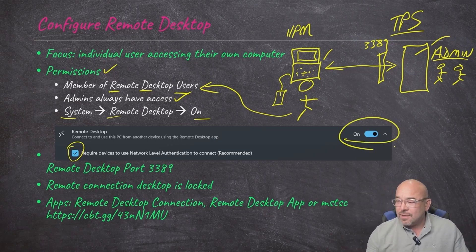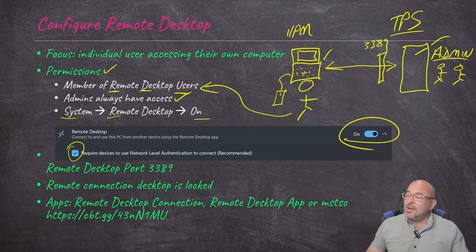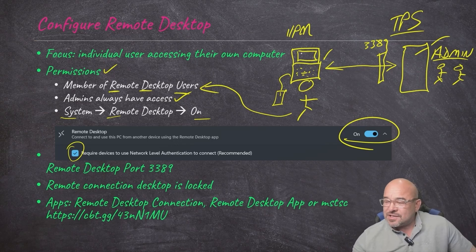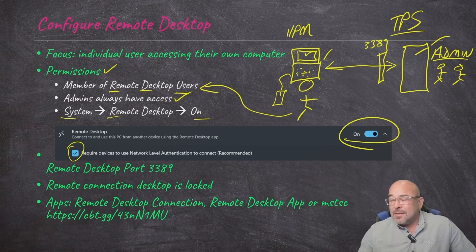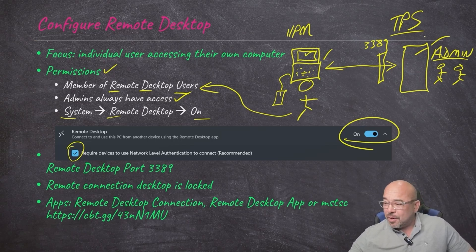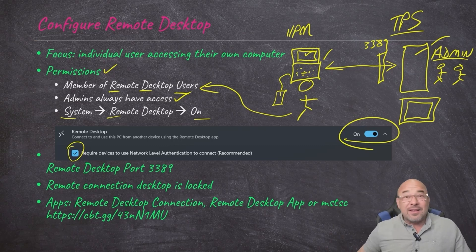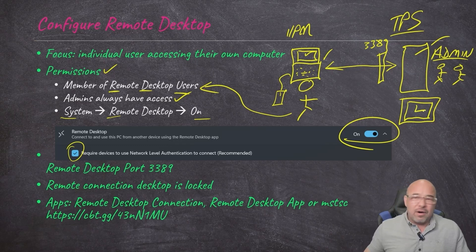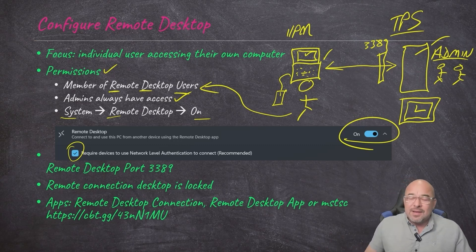When I make this connection and I can see the desktop from my remote computer on my laptop at home, what appears on the monitor at work? So the cleaning crew walking by — can they see everything I'm doing, that I'm filling out my TPS reports? All they'll see is a lock screen on this computer. Even if it was unlocked prior to me establishing this remote desktop connection, it then suddenly becomes locked as soon as I make this connection.